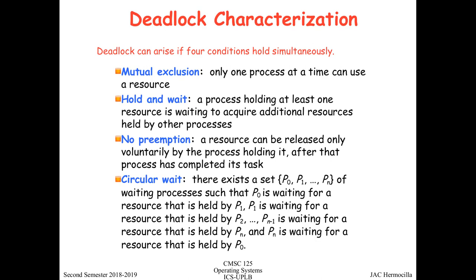To formally characterize a deadlock given our system model, these are the conditions that must hold simultaneously — meaning all of these should be true in the system for a deadlock to occur. The first condition is mutual exclusion: only one process at a time can use a resource. Given the disk example, only one process can read or write to the disk at a time.